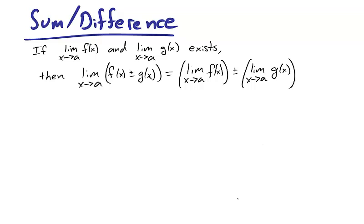Most of our results about continuity jump right out of the limit laws. Take for instance the sum and difference limit law, which says that if the limit exists, then two functions can be combined before or after the limit is taken.